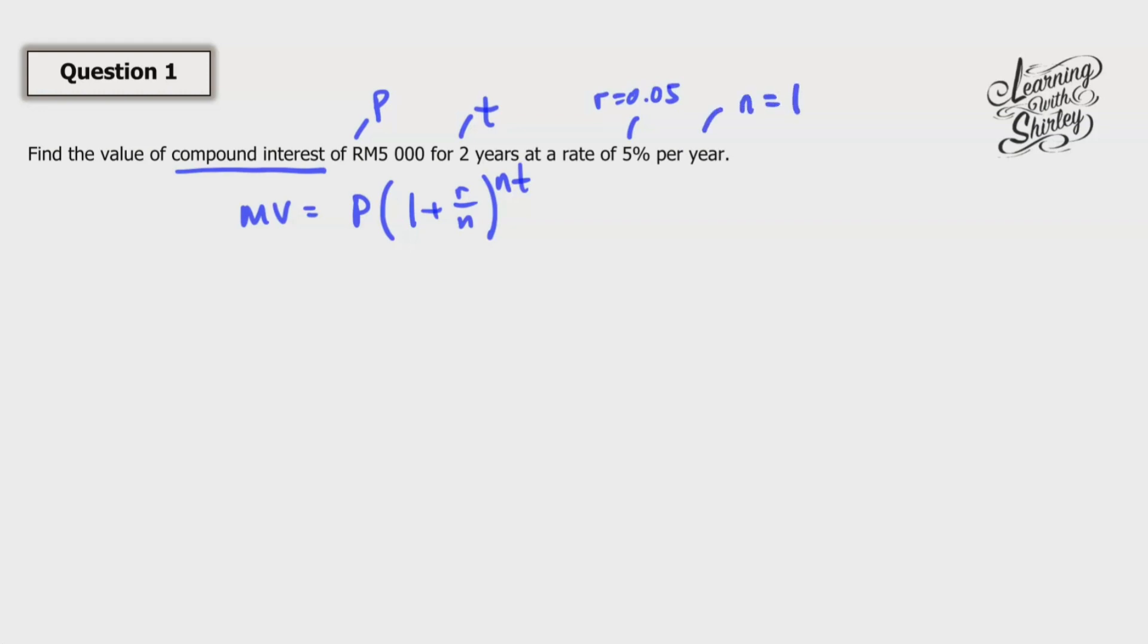So we're going to extract out the information. I'm going to list down what are our P, r, n, and t. So our P is 5000. And then r is 0.05. n is 1. And t is 2.